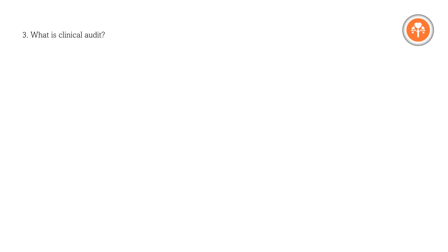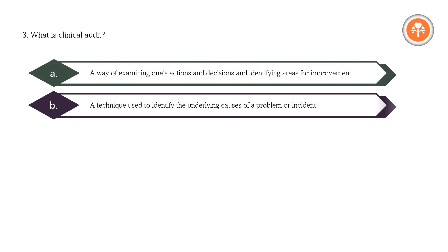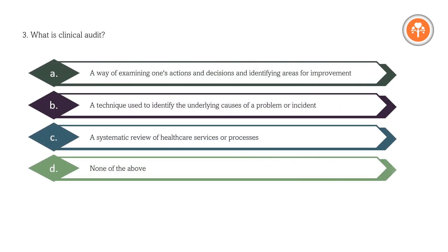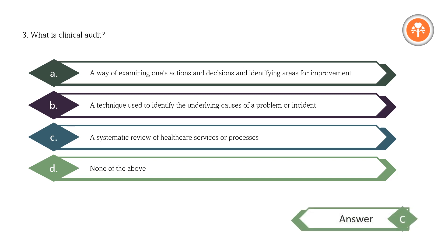What is clinical audit? A. A way of examining one's actions and decisions and identifying areas for improvement. B. A technique used to identify the underlying causes of a problem or incident. C. A systematic review of healthcare services or processes. D. None of the above. Answer: C. A systematic review of healthcare services or processes.